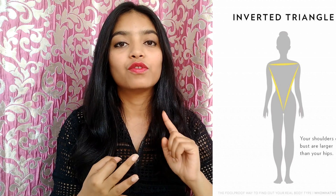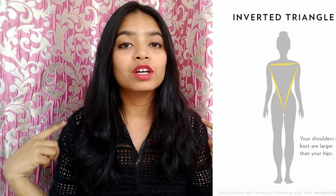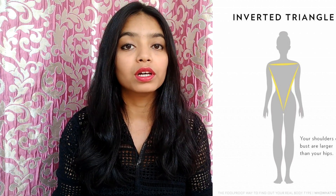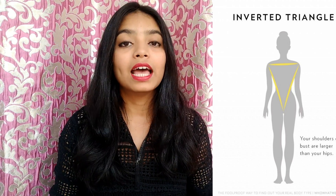If you have taken body measurements for your shoulders, chest, waist, and hip, and your shoulders are wider than your lower body, your hips and your legs are defined, then if your shoulders are broader than your hips, you are an inverted triangle body type.